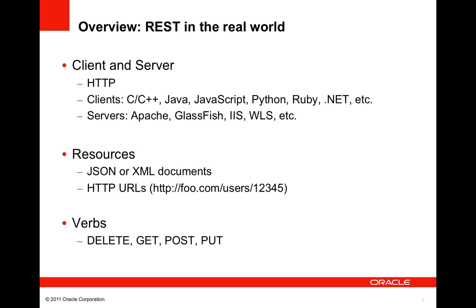When people talk about REST, they are most likely referring to the real-world incarnation of the REST architectural style. In this form, clients and servers use HTTP to exchange resource representations. REST is both platform and language independent, so there are a wide variety of clients, including applications written in C++, Java, .NET, and web pages with JavaScript. Likewise, there are a wide variety of servers, including HTTP servers like Apache and J2EE web containers such as GlassFish and WLS.